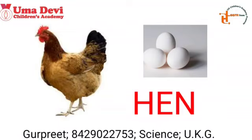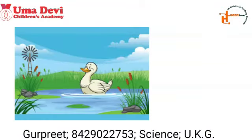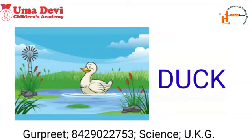Now let's go to the next farm animal. What is this? Yes, this is duck. We can see them in the farm swimming in the pond. And what is the spelling of duck? D-U-C-K. Repeat again. D-U-C-K. Duck.